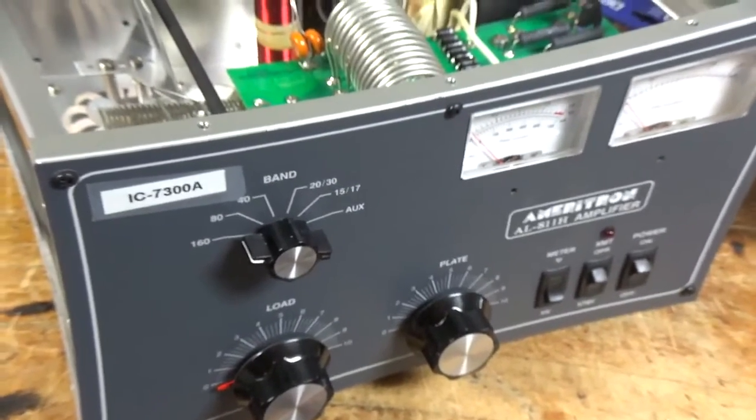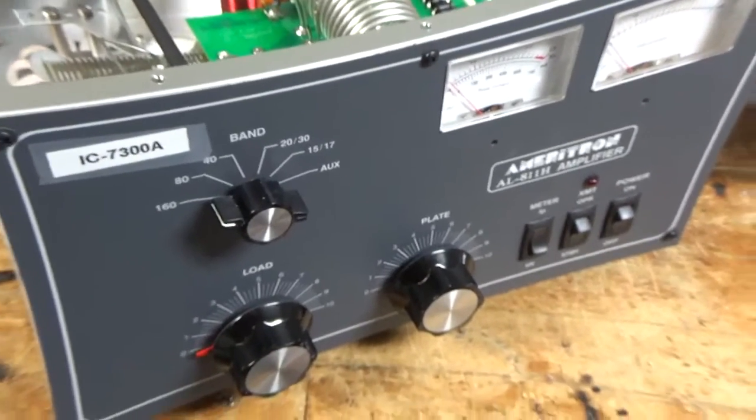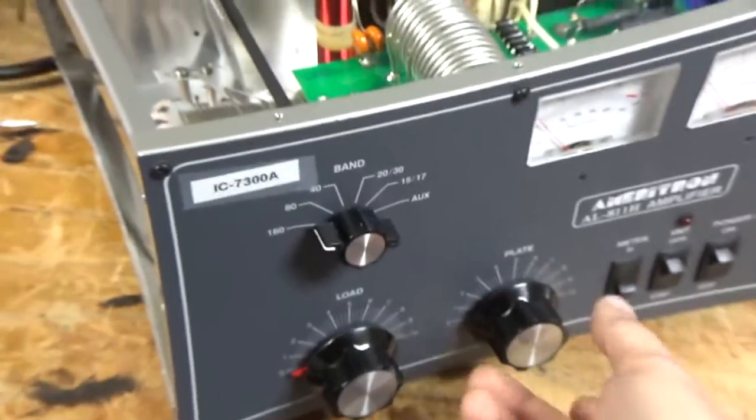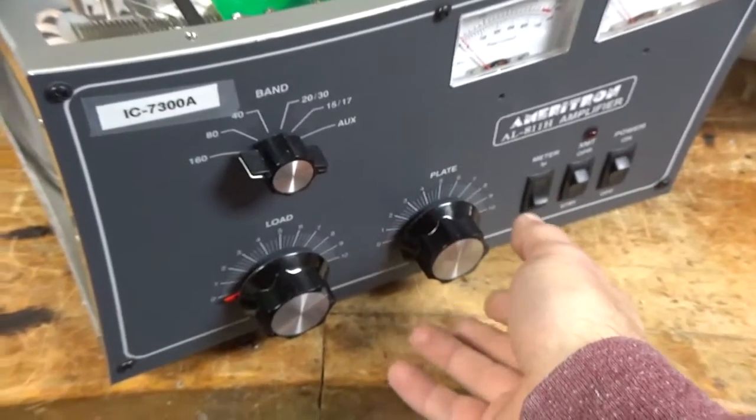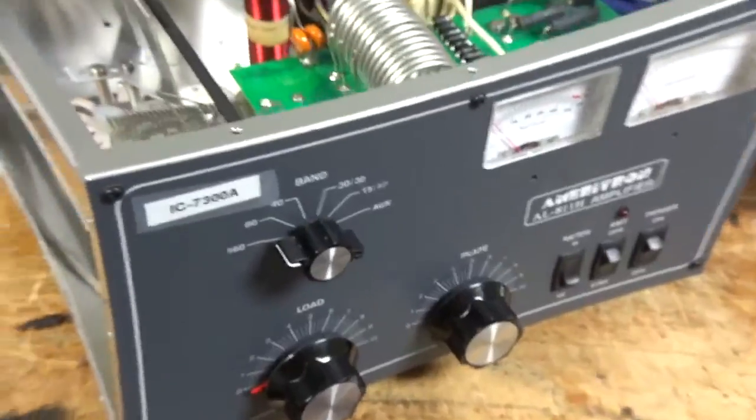He wanted it as a second backup amp. This was made in 2023, so he used it for a little bit, and he said it had a tuning problem, where the plate would skip when you go to adjust it. The plate air variable capacitor wasn't turning all the time. Set screws were nice and tight, but there's a problem with the vernier drive, so I'm going to swap that out.